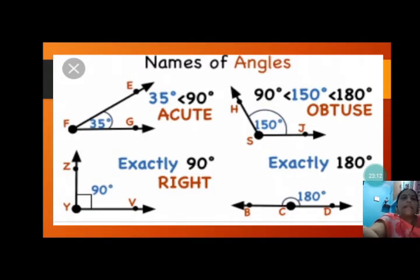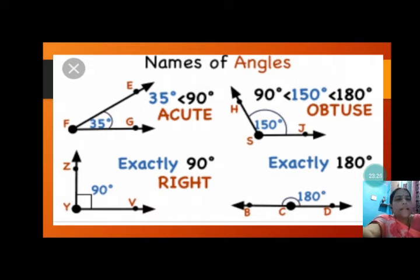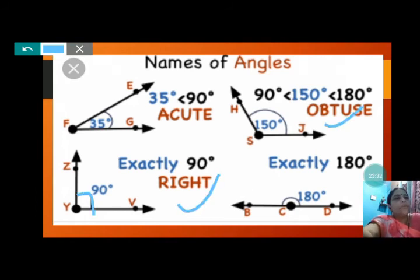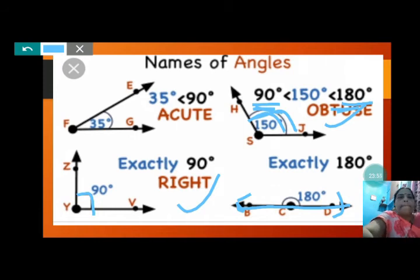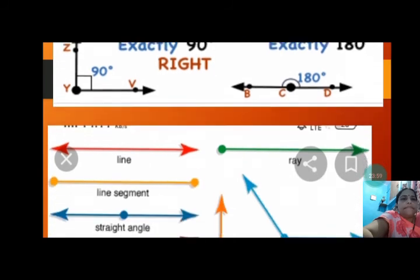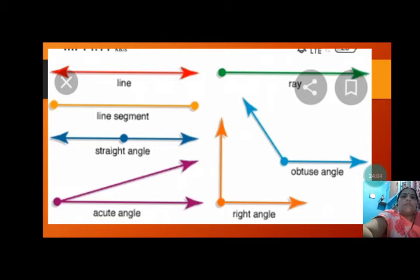Now let us come to the names of the angles we have studied. First: acute angle — 35 degrees is less than 90 degrees, so that is acute angle. Then: right angle — exactly 90 degrees. Then: obtuse angle — 150 degrees comes between 90 and 180, so greater than 90 and less than 180, that will form obtuse angle. And exactly 180 degrees — that is a straight angle. In the previous class we also read about line, line segment, and ray.